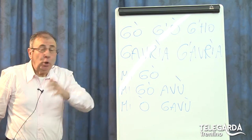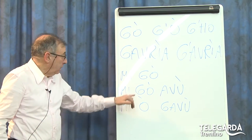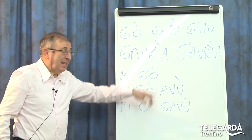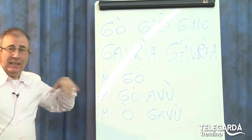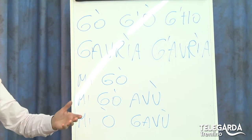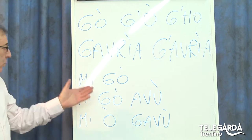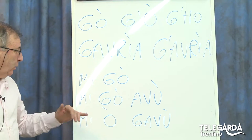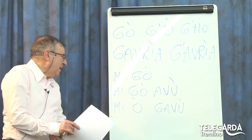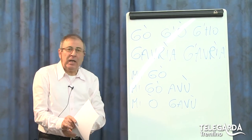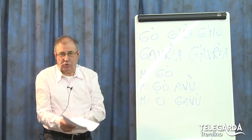Ti te hai ga vu, lul ga vu, eccetera eccetera. Quindi non è per niente in contraddizione l'una o l'altra forma, sta naturalmente ad una persona a decidere se preferisce una o l'altra. Quindi si può dire 'mi go avu' o 'mi o ga vu', con tutte le forme ovviamente che ne conseguono.